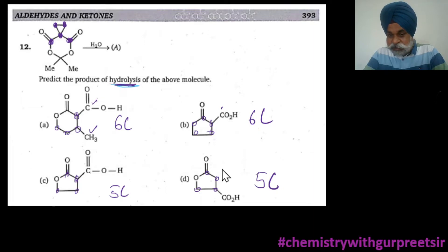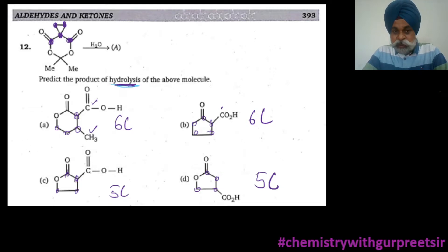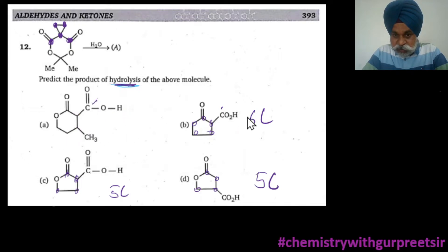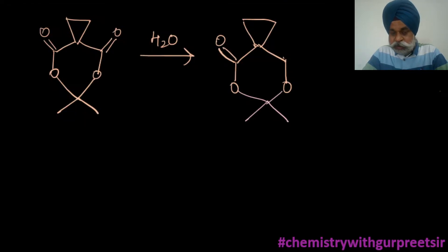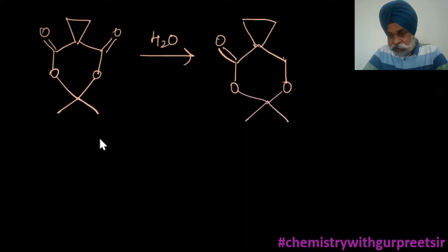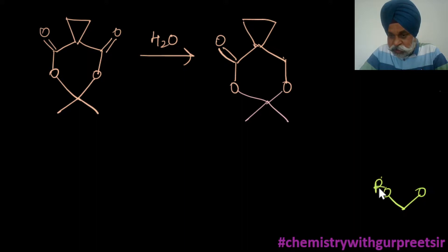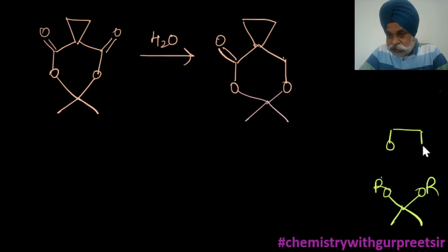So you could narrow down the answer to either A or B, or between C or D. Now let us pay more attention to the compound itself. Many of you ask whether this has an acetal linkage. An acetal linkage is where you have two alkoxy groups on the same carbon. This is a cyclic acetal-type structure, though it is not purely acetal — it has an ester part as well.